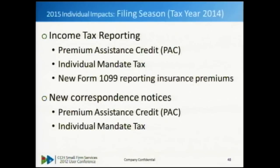New correspondence notices are expected as all the data touch points between IRS, HHS, and the state exchanges are compiled and validated on the back end. The IRS will be able to do matching on the amount of premium assistance credit - does what's reported match what the state exchange said they actually gave the taxpayer throughout the year? You may also get correspondence notices related to the mandate tax, depending on what enforcement looks like. All of this comes together for a very eventful 2015 filing season.